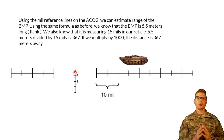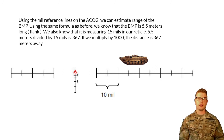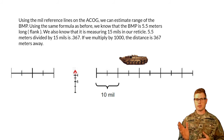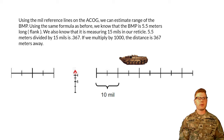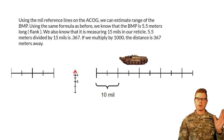The ACOG reticle also uses mil reference lines off to the left and right. They get a little fuzzy toward the edges, but the first two sets — the 10-mil increments, so about 20 mils — are easily identifiable. Using the mil reference lines on the ACOG, we can estimate range of the BMP using the same formula as before — nothing's changed, still 10-mil increments, same as the M22. The BMP is still 5.5 meters on the flank, measuring 15 mils in the reticle. 5.5 divided by 15 is 0.367, multiplied by 1,000 gives a distance of 367 meters.